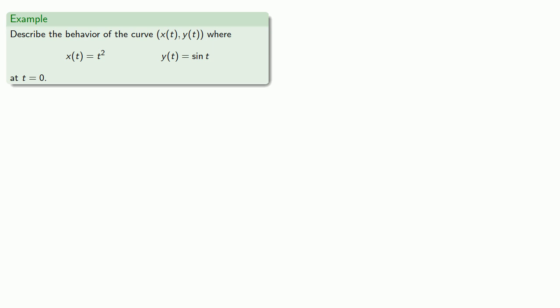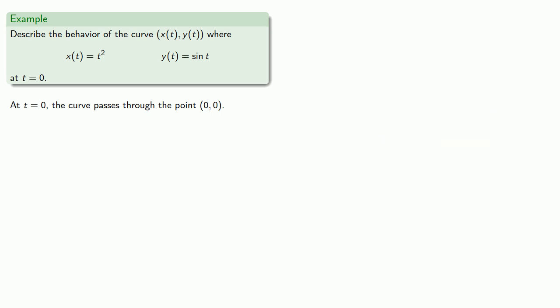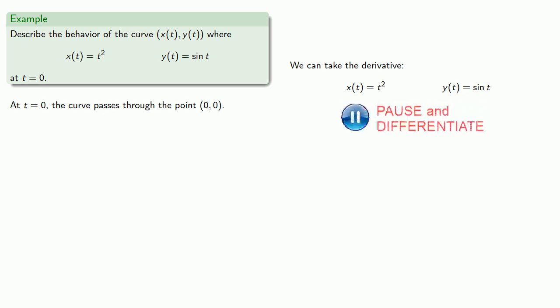For example, let's describe the behavior of the curve x(t), y(t) where x(t) and y(t) are given by these functions. If we want to talk about behavior it helps to know where we are, so first we find where we are at t equal to zero. The curve passes through the point (0, 0). Now if we want to describe the behavior of the curve we want to talk about the derivative, so we take the derivative of x(t) and y(t). At t equal to zero, those derivatives will be the values we find.